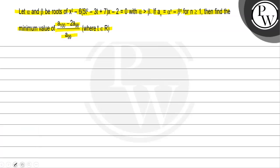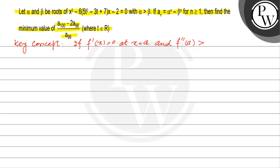The key concept here is: if f'(x) equals 0 at x equal to a, and f''(x) is greater than 0 (positive), then f(x) will have a minimum value at x equal to a.